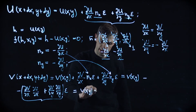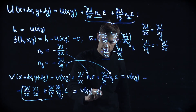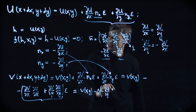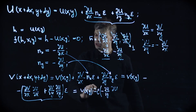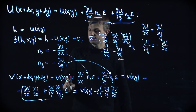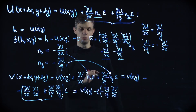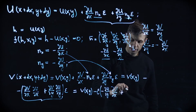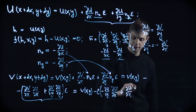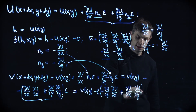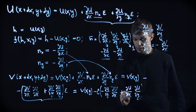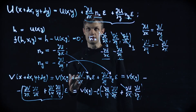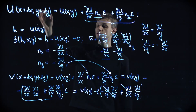Writing it out: dv/dx is minus du/dy, and substituting dv/dy with du/dx. We get terms like du/dy times du/dx minus du/dx times du/dy — and you see what happened: they cancel each other. So there is no change in the v function at all if we move along the steepest descent direction of the u function.